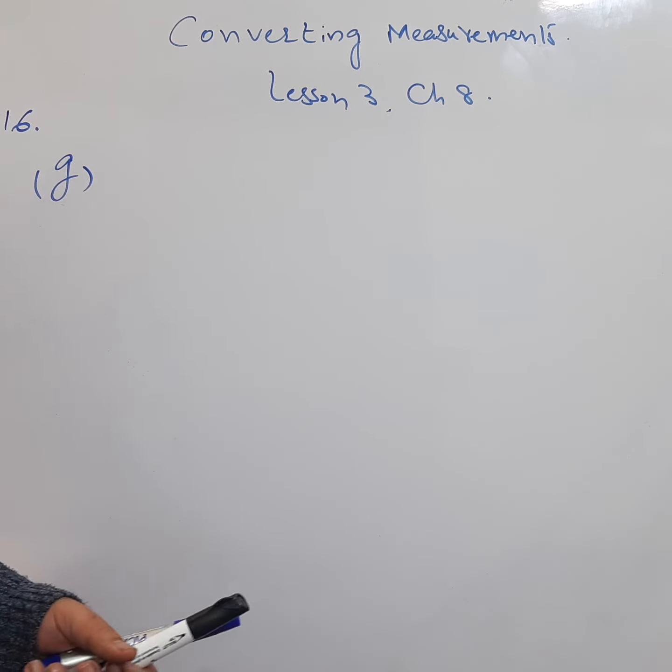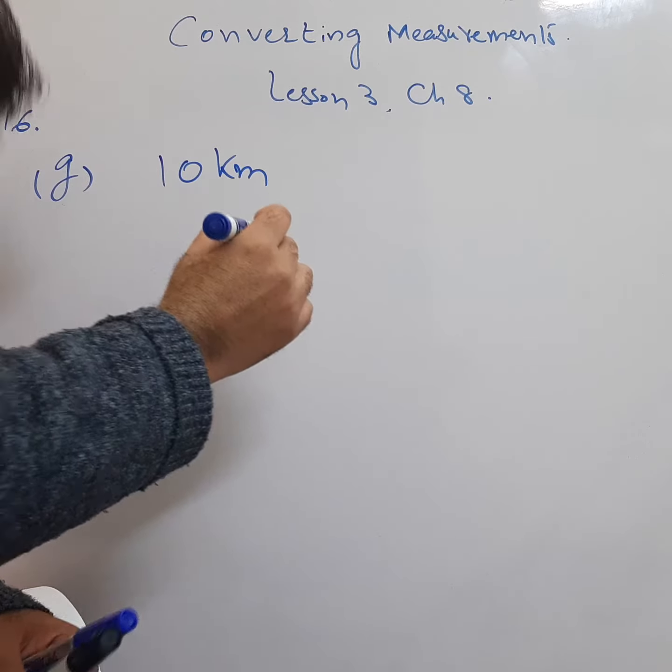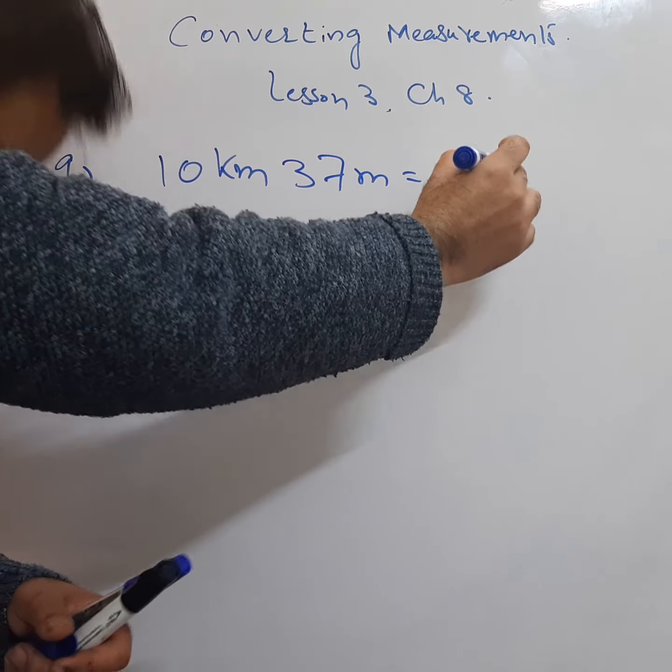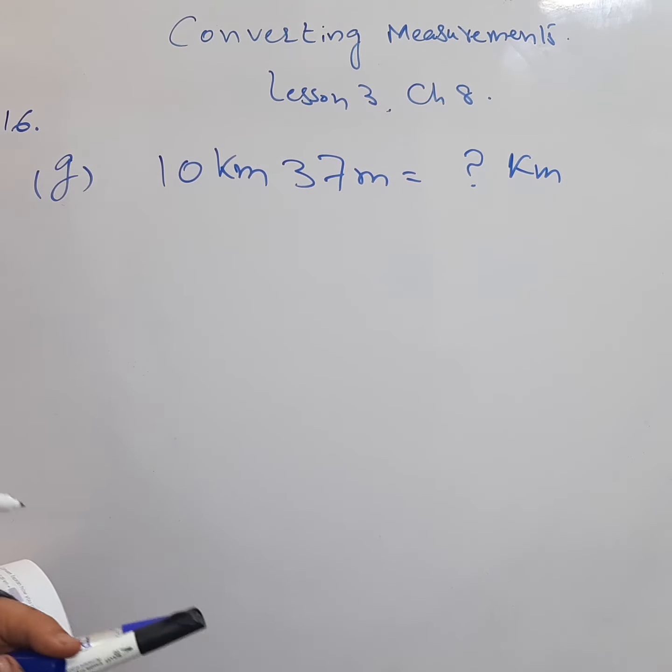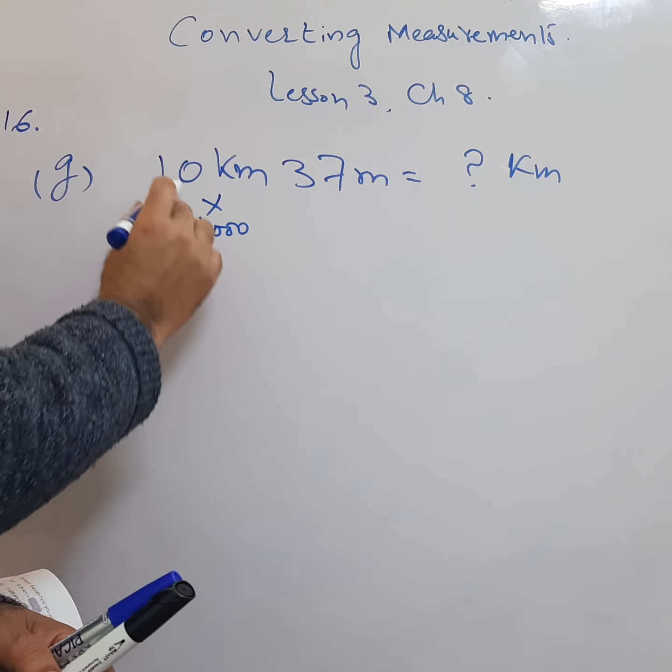Part G for question number 16, page 182. We are doing decimals, Chapter 8. 10 kilometers 37 meters - we need to convert it into kilometers. So we will do it in two parts. First, multiply this with 1000. You get 10,000 meters.